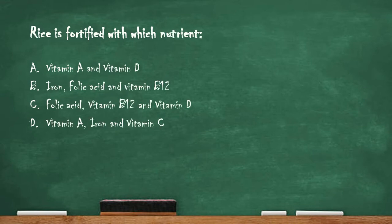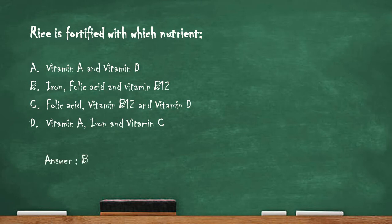Next question: rice is fortified with which nutrient? Option A: vitamin A and vitamin D. Option B: iron, folic acid, and vitamin B12. Option C: folic acid, vitamin B12, and vitamin D. Option D: vitamin A, iron, and vitamin C. The right answer is option B — iron, folic acid, and vitamin B12. Rice is mainly fortified with these nutrients to prevent their deficiency.